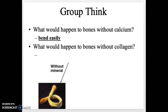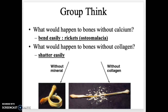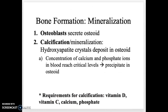Without calcium, bones would lack strength and bend easily. Without collagen, bones would lack flexibility. These conditions correspond to real diseases: the absence of proper collagen leads to rickets or osteomalacia, while deficiency leading to brittle, fragile bones is called osteogenesis imperfecta, or brittle bone disease.